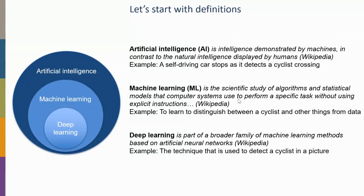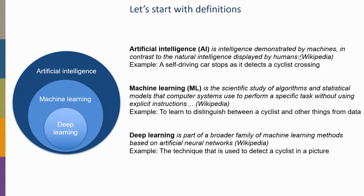Let's start with some definitions, because they are often interlinked. Artificial intelligence — AI — is defined by Wikipedia as intelligence demonstrated by machines, in contrast to the natural intelligence displayed by humans. For example, a self-driving car that stops for a cyclist without any human intervention is making decisions that only humans were thought capable of making, maybe 15 years ago.